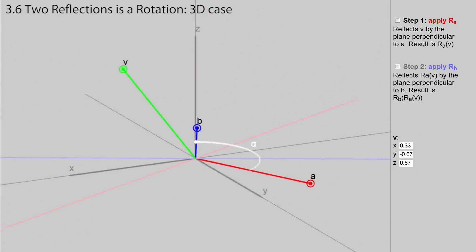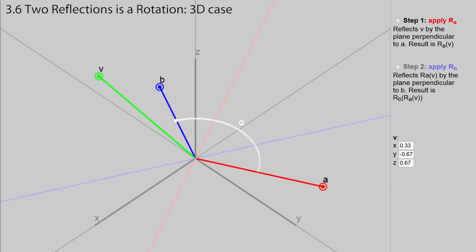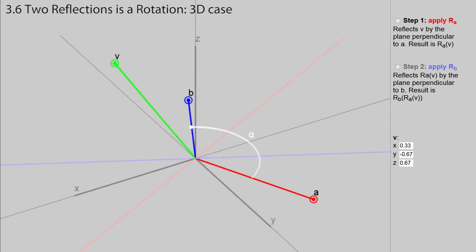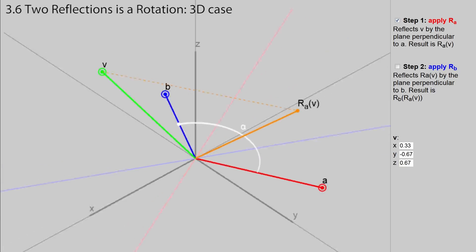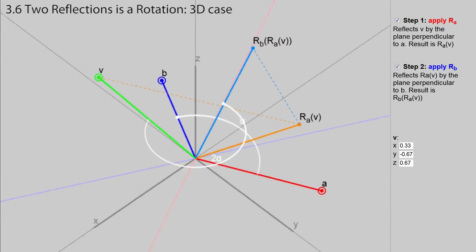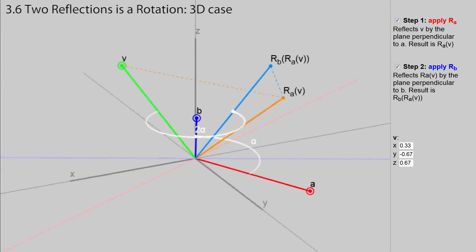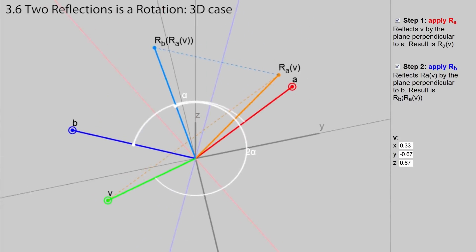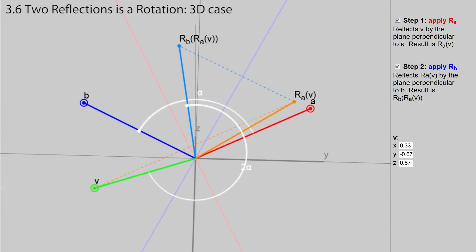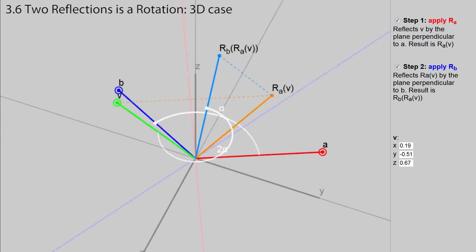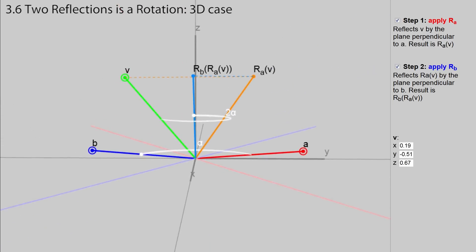In the 3D case, the vector v can be split into two different parts, one lying inside the plane, defined by a and b, and one lying outside the plane. As seen here, when the vector gets reflected by each plane, its outside part stays the same. So for the inside part, we are back to the 2D case, and it just gets rotated by twice the angle.